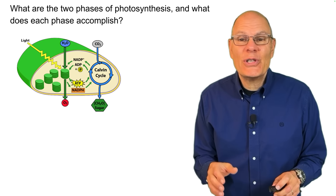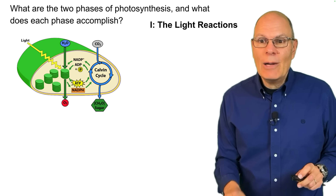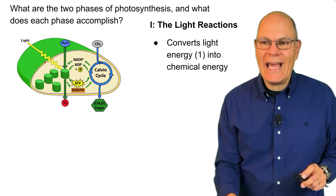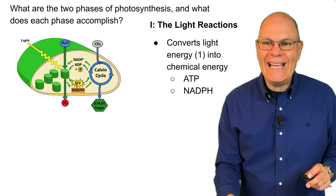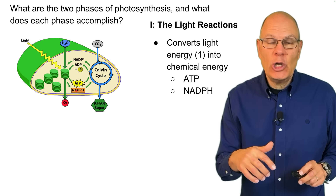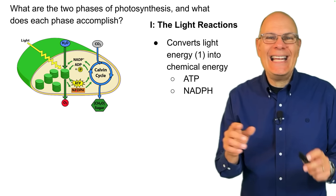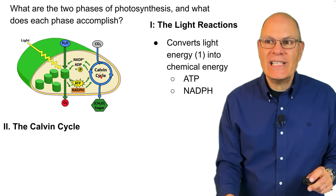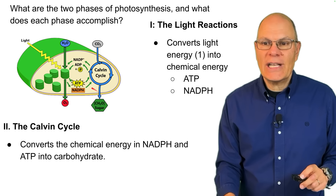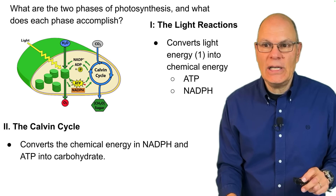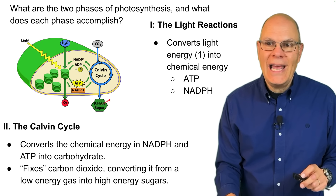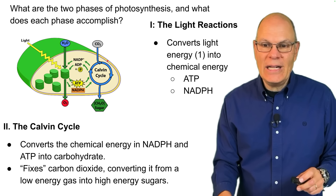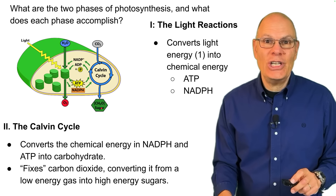What are the two phases of photosynthesis and what does each accomplish? The light reactions convert light energy into chemical energy in the form of ATP and NADPH — NADPH is an electron carrier like NADH. The Calvin cycle is the second phase of photosynthesis; it converts the chemical energy in NADPH and ATP into carbohydrate by using carbon dioxide as an input, fixing that low-energy gas into high-energy sugars.